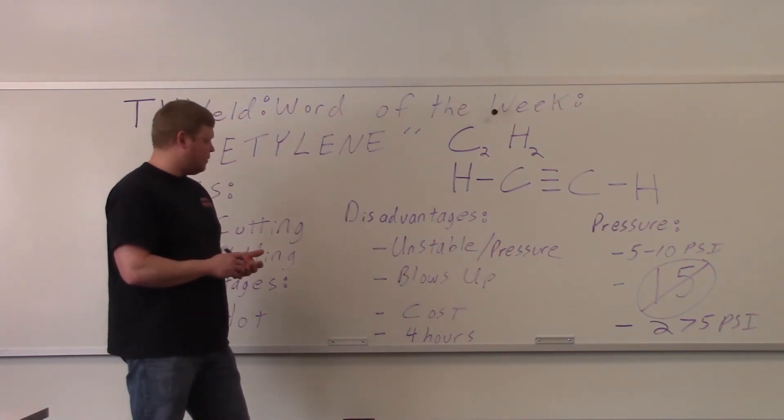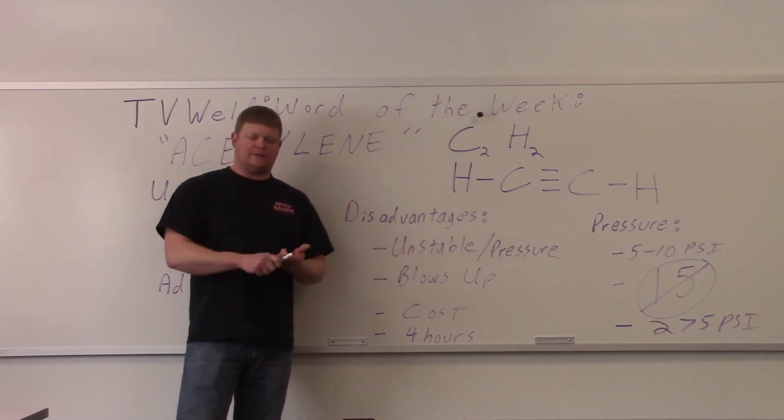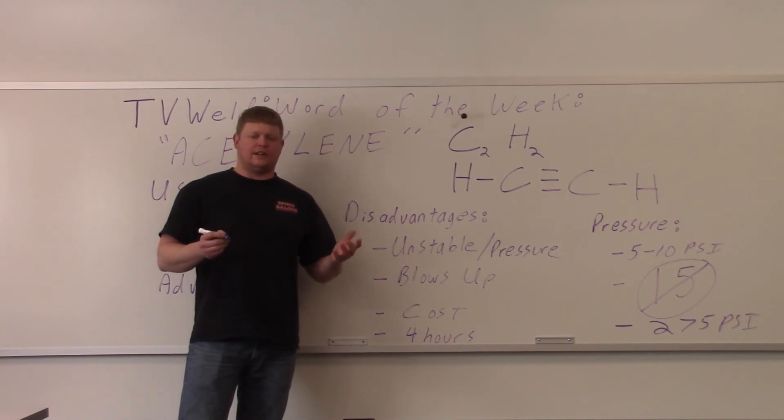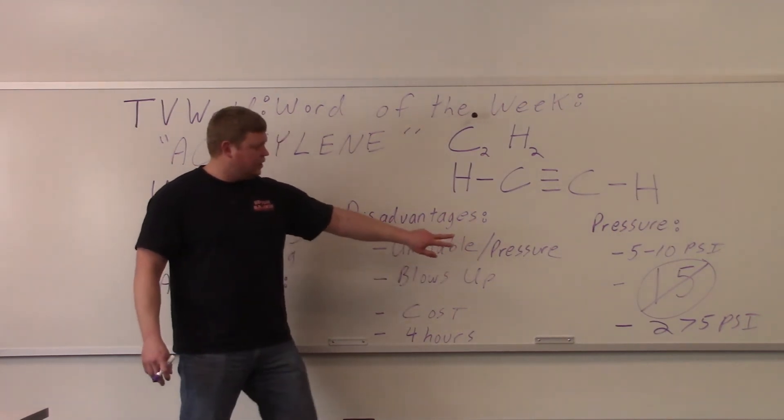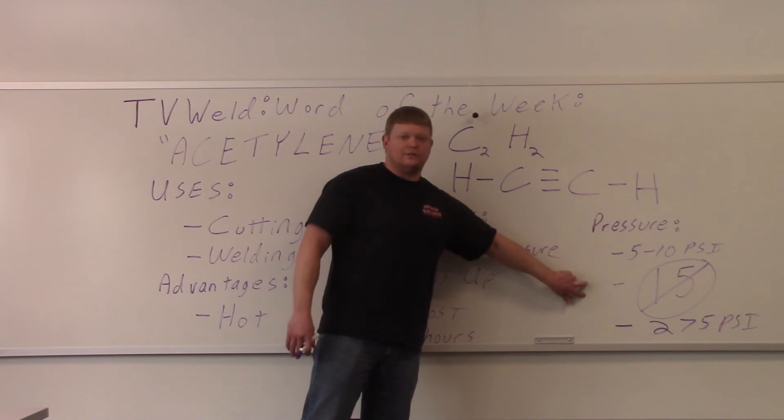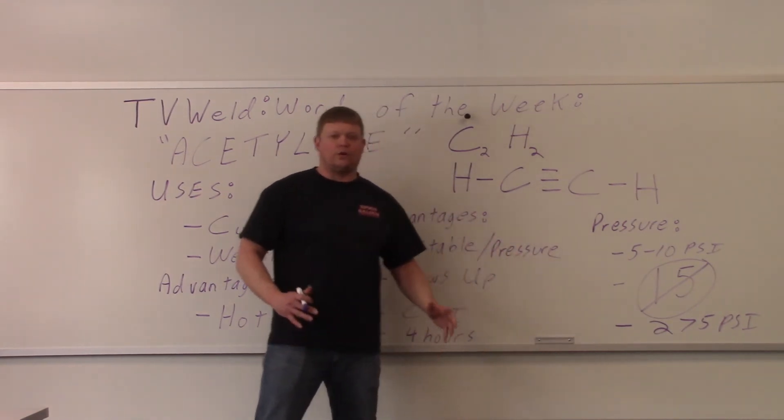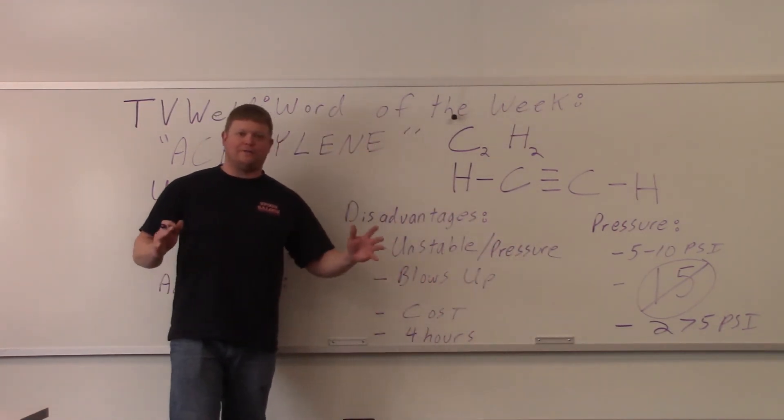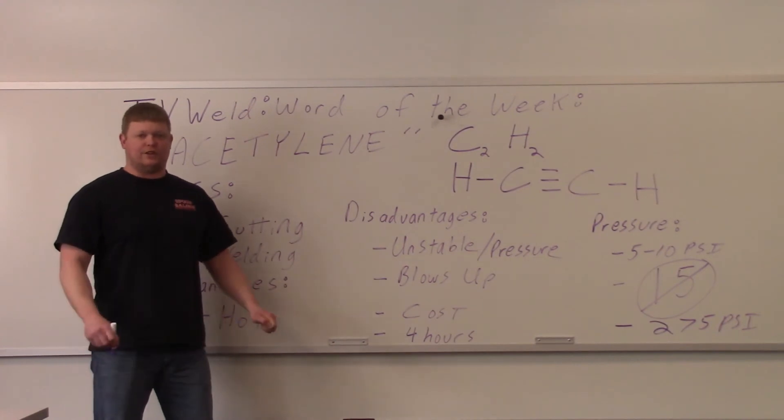So what we're going to do now is go out in the lab and I'll show you the bottle that we have cut in half, so you can see the inside of an acetylene tank. And also, we will show you the acetylene gauge so you can see where that 15 goes to extreme red, which basically means don't go above 15. So do not go above 15 psi if you're using acetylene.